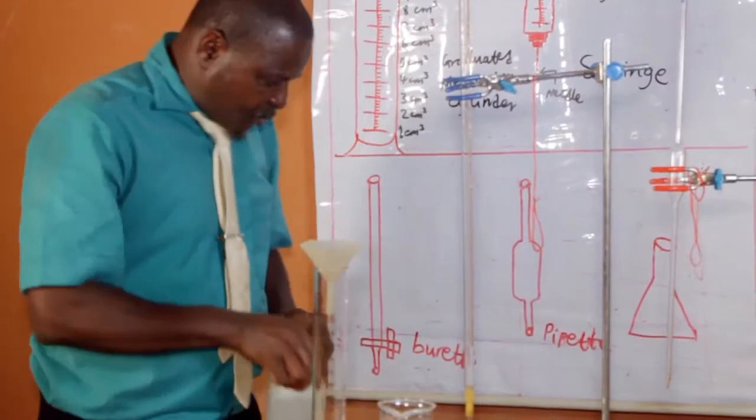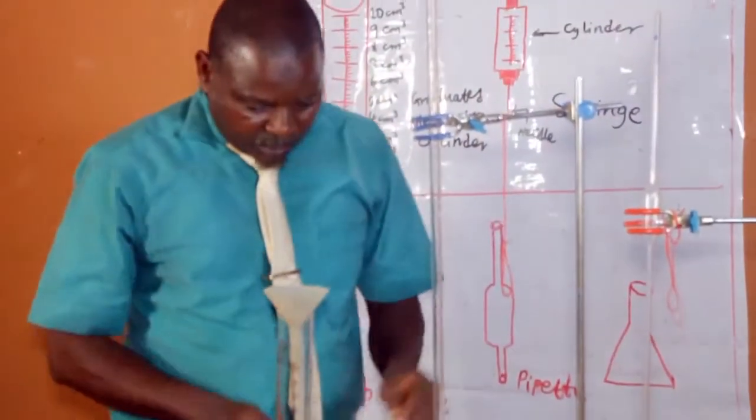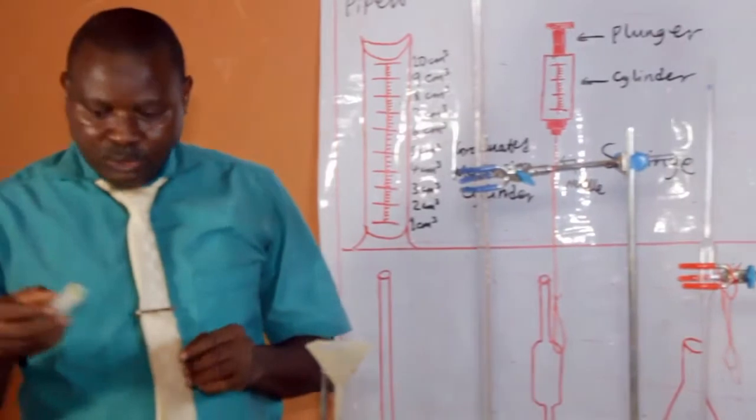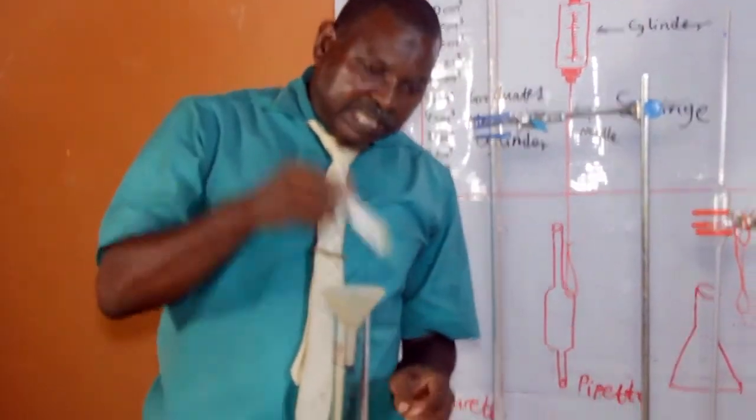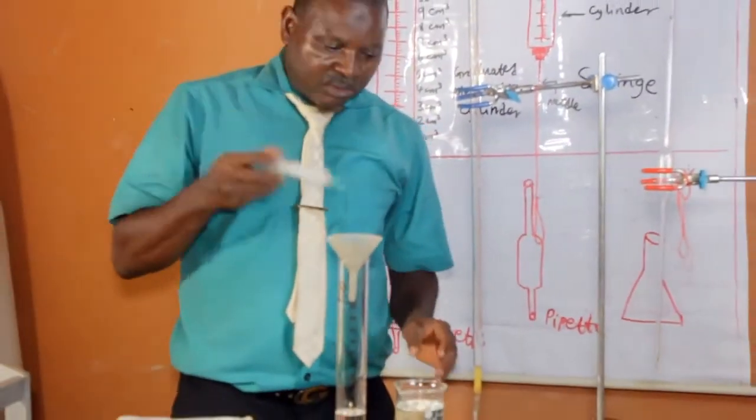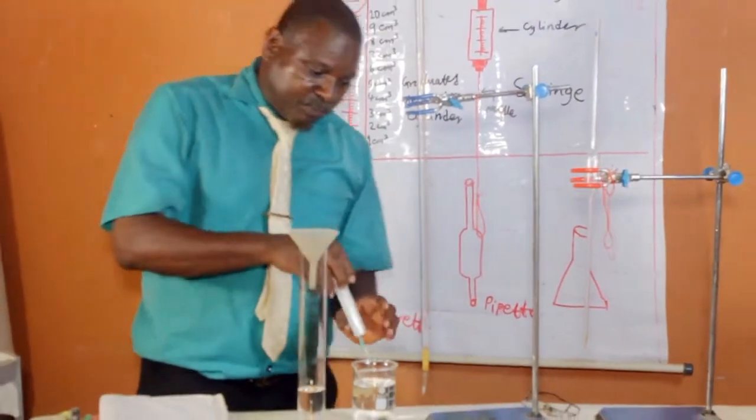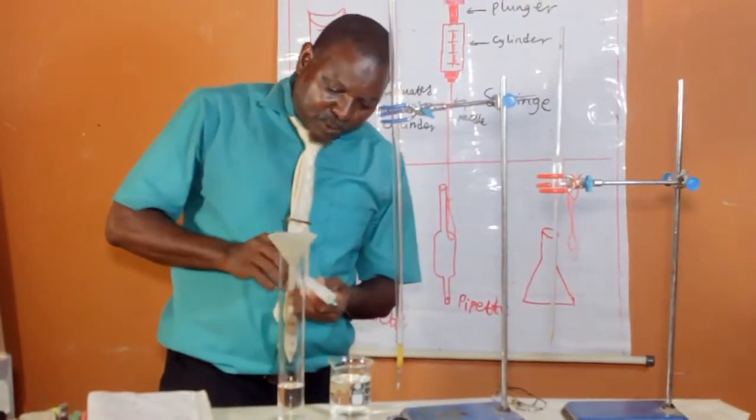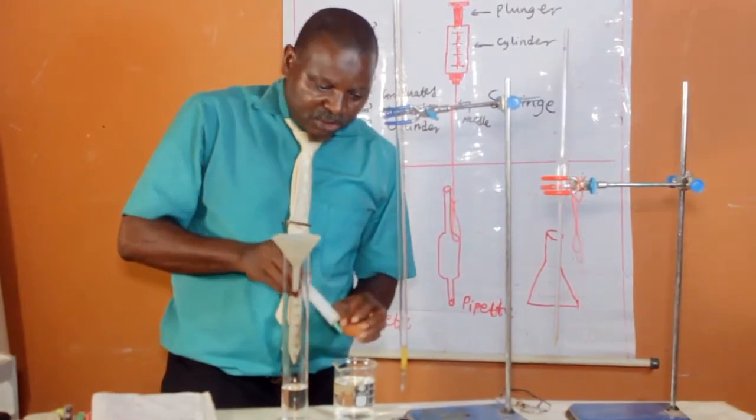Now, in the case of burets, we use syringe to withdraw either acid or base from the beaker. This is the plunger, this is the cylinder of the syringe.